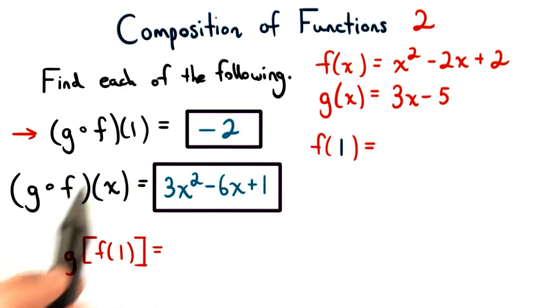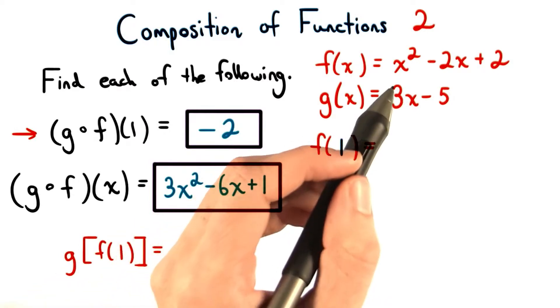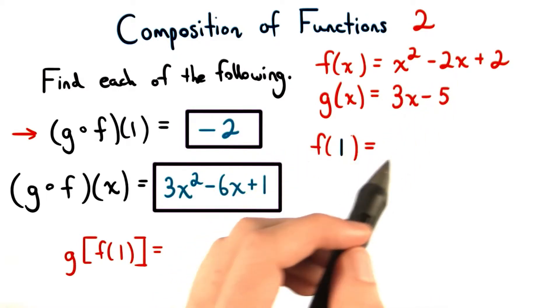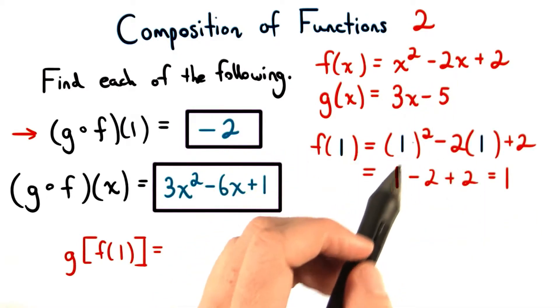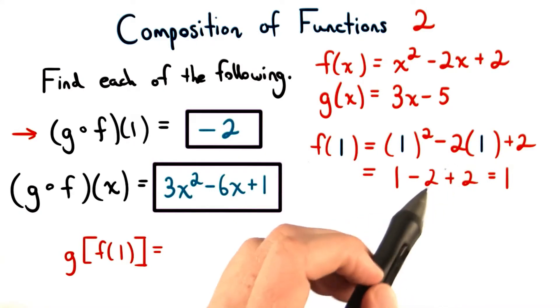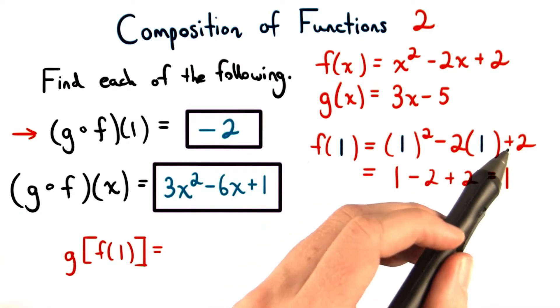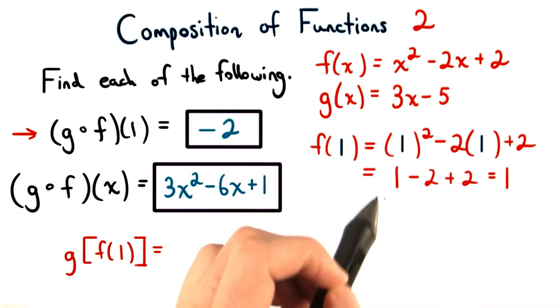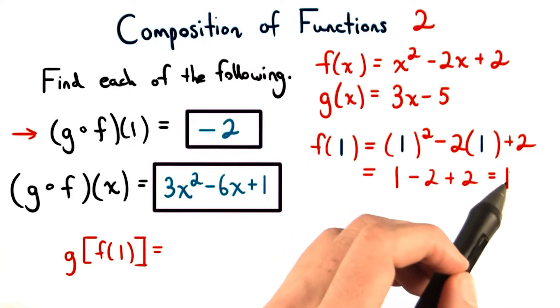For this first problem, we'll start by finding the f of 1. We need to find the output when the input for f is 1. So, letting x equal 1 here and here, we'll have a new expression. 1 squared equals 1, negative 2 times 1 is negative 2, and then we'll have positive 2 on the end. Summing these together, we get a final output of positive 1.